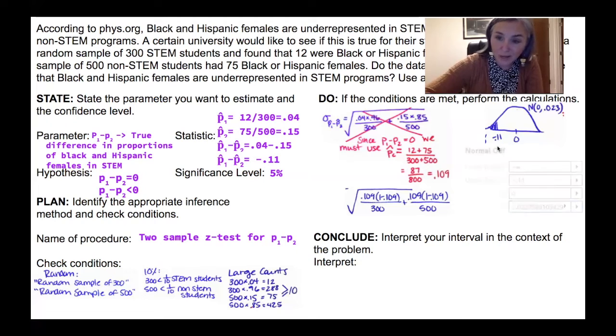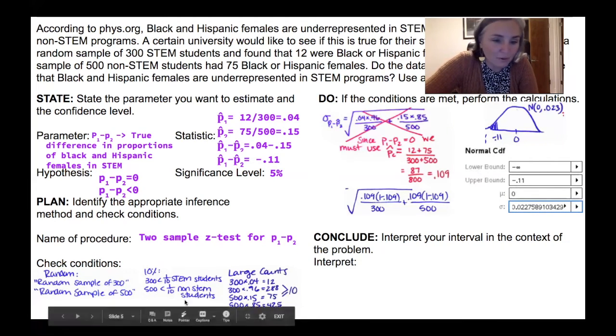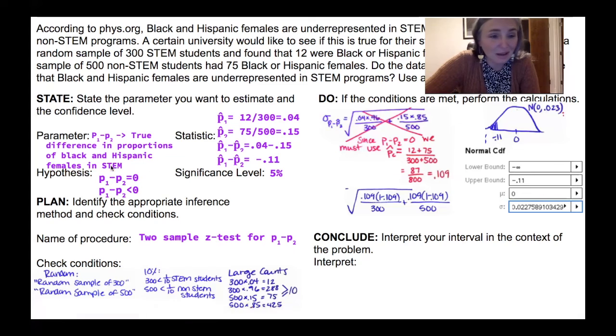And from there we could find our Z, go to our table. Or we can go to the calculator, which is what I did. So I said, okay, I'm going to use my normal CDF function. I proved I can use it by checking conditions. I found you a mean, which I said, okay, I think it's zero.